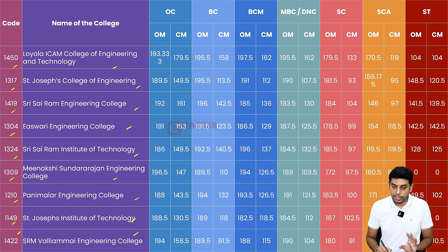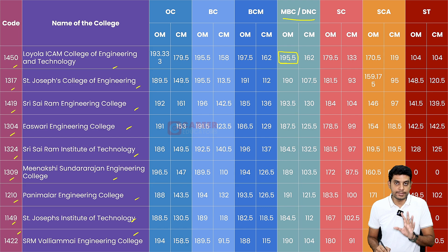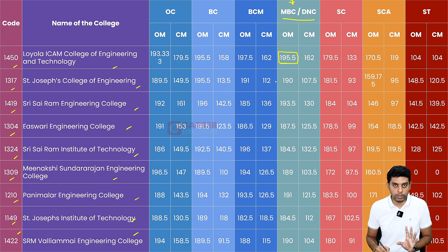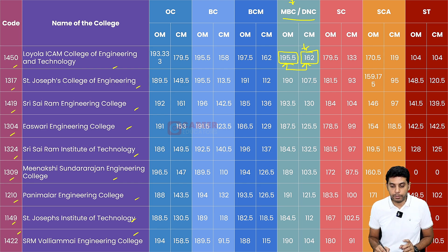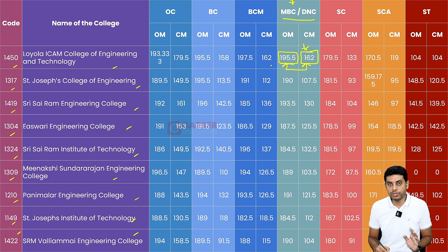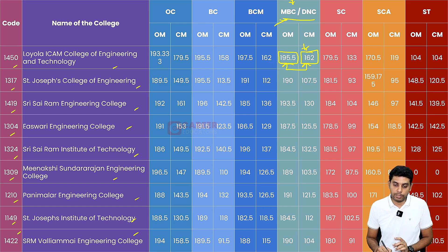As I mentioned earlier, if you have MBC students, you can get a slightly better placement. Now for the ICAM, you have the opening mark. The MBC community student gets the first seat at 195.5 marks. In the same college, the MBC community student gets the last seat at 162 marks. So if your mark falls between 195 and 160 and you belong to the MBC community, just refer to this.